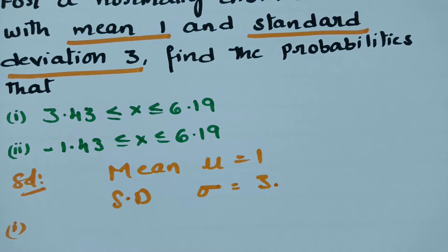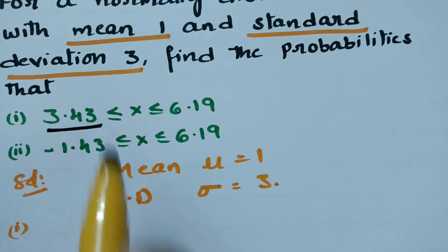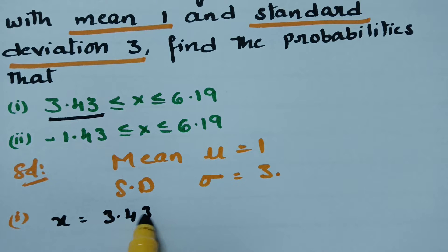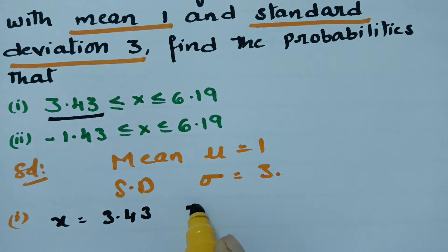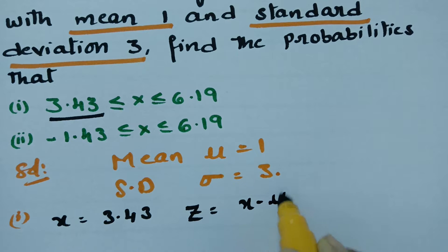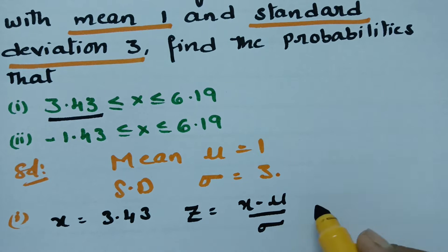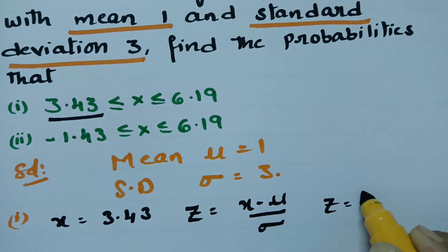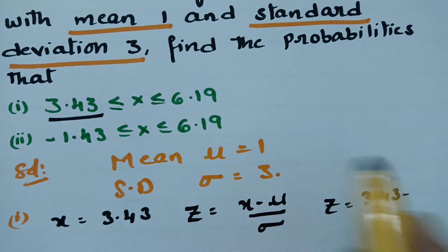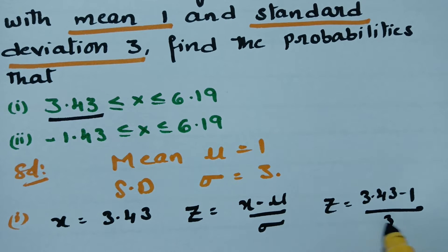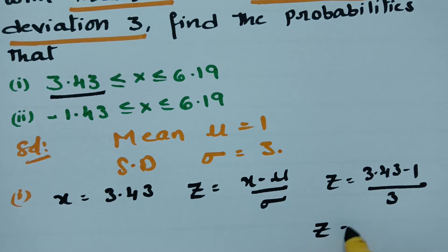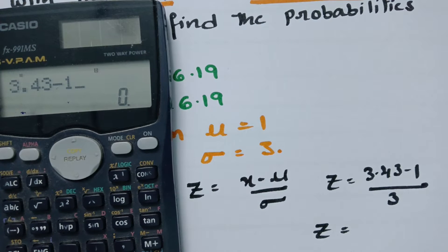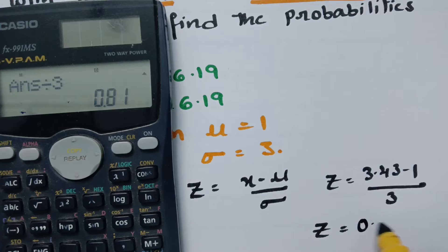When x is equal to 3.43, we have to convert this in terms of z. The formula is z = (x − mu) / sigma. Substituting x = 3.43, mu = 1, and sigma = 3, we get z = (3.43 − 1) / 3 = 0.81. So x1 = 3.43 gives us z1 = 0.81.